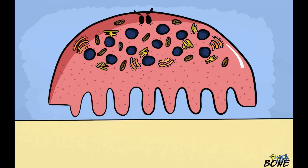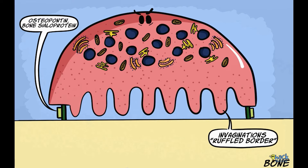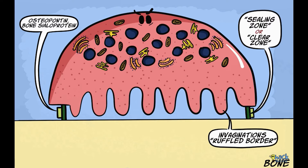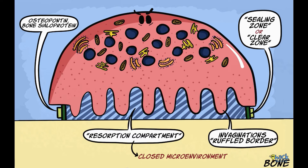After being recruited to the site of resorption, osteoclasts develop several invaginations on their plasma membrane facing the bone to be resorbed — this is called the ruffled border. The plasma membrane of the osteoclast then attaches to the bone via proteins like osteopontin and bone sialoprotein. These attachments are called sealing zones or clear zones, which help form the resorption compartment — a closed and sealed microenvironment between the osteoclast and the bone.